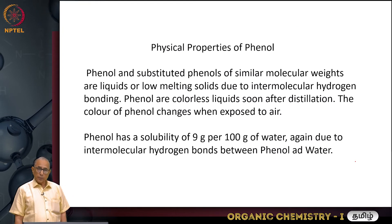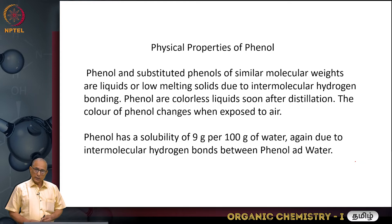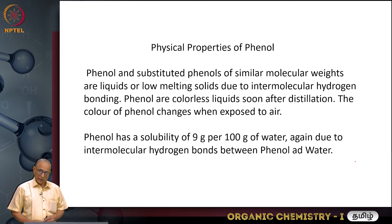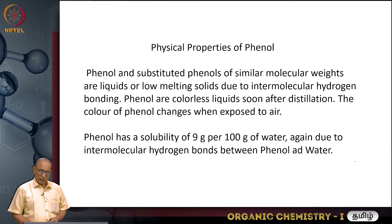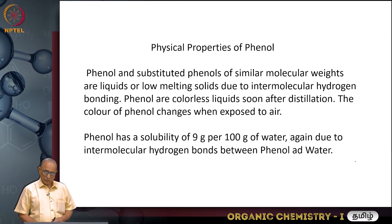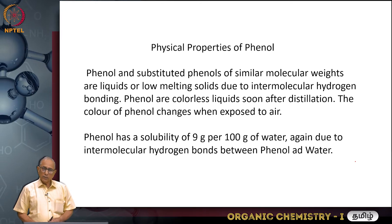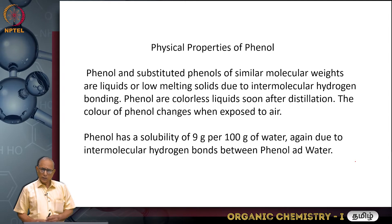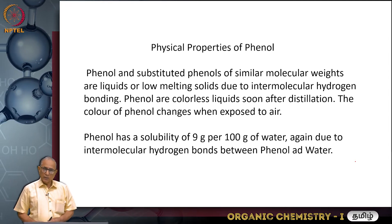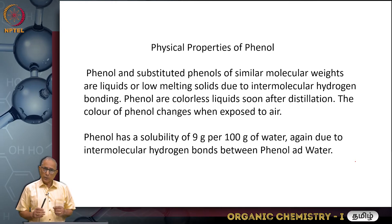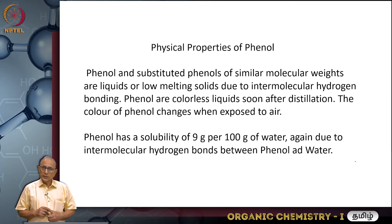Now looking at the physical properties of phenol — phenol has an aromatic ring, a benzene ring, or other rings like naphthalene, or substituted benzene rings as in meta-cresol, para-cresol, and ortho-cresol. The physical properties of phenol — melting point, boiling point, and solubility — depend upon two different factors. One factor is the molecular weight.